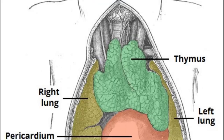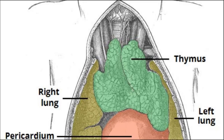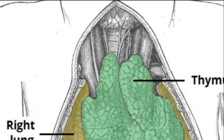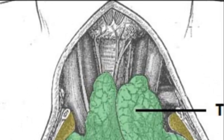Moving on to the anterior mediastinum: you have the thymus gland, lymph nodes, and fat tissue.